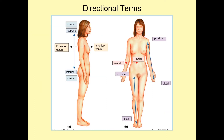And then we have some directionality terms. Cranial refers to towards the head and caudal refers to towards the tail. These are usually used in animals with different anatomical positions, such as animals who have all four limbs on the ground. For us, we usually use superior and inferior — superior towards the head, inferior towards the feet. Posterior or dorsal refers to closer to the back, and anterior and ventral refers to towards the front.